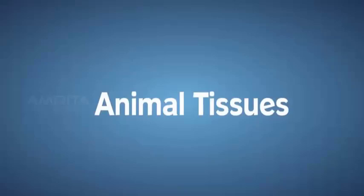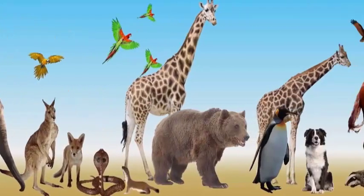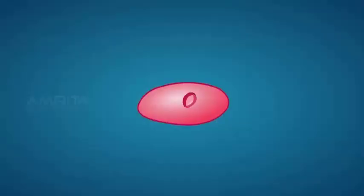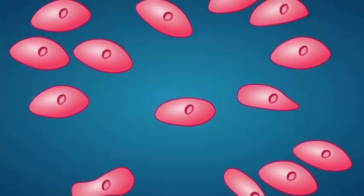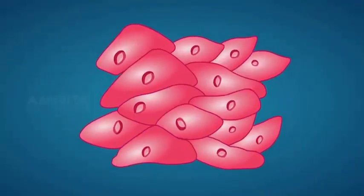Animal Tissues. Almost all animals are made up of tissues. Tissues are groups of cells that are similar in structure and work together to achieve a particular function.